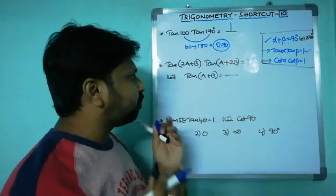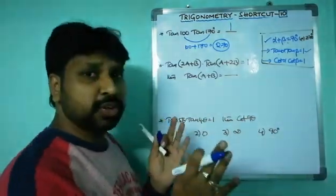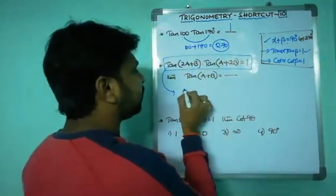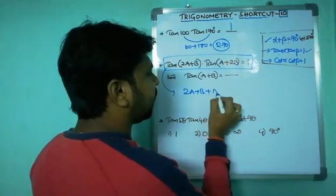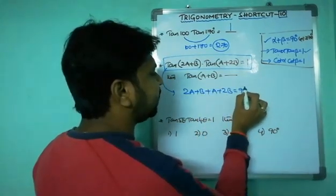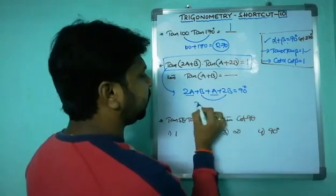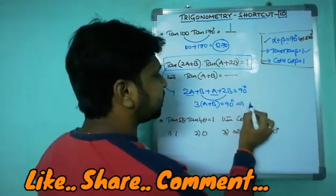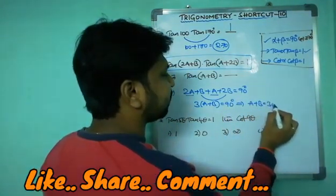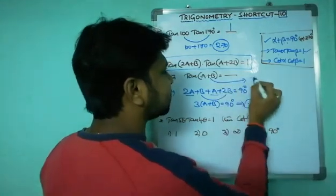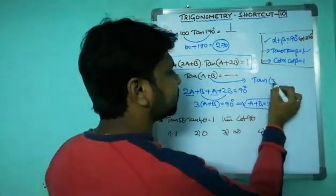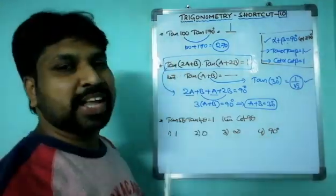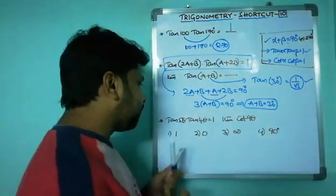Next: tan(2a + b) × tan(a + 2b) = 1, find tan(a + b). Using tan α × tan β = 1 means α + β = 90°. So (2a + b) + (a + 2b) = 90°, giving 3a + 3b = 90°, so 3(a + b) = 90°, therefore a + b = 30°. They ask for tan(a + b) = tan 30° = 1/√3.